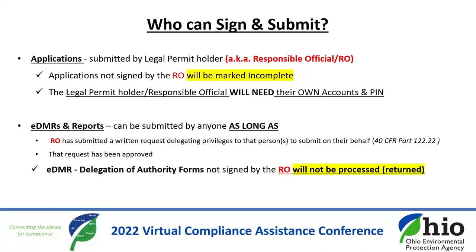According to the poll, it looks like all of you are right on track — which brings us to who can sign and submit. Applications have to be submitted by the legal permit holder, which is the RO. These can be completed by others, but if they're not signed by the RO, they will be kicked back as incomplete. This is why the responsible official also needs their own account and PIN. For eDMRs and reports, those can be submitted by anyone, as long as the RO has provided Ohio EPA with a written request delegating privileges to that person and that request has been approved. Forms not signed by an RO will be denied and returned.